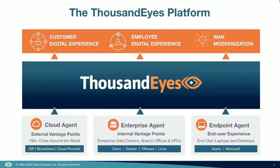The ThousandEyes platform provides visibility from three perspectives. The first is from our cloud agents, located in over 300 points of presence in over 190 cities in over 60 different countries around the world. This provides quick time to value as well as visibility into how effectively customers can access services across the Internet from vantage points in Tier 2 and Tier 3 providers, broadband providers, as well as all the major cloud providers around the world.